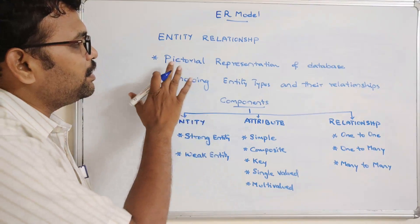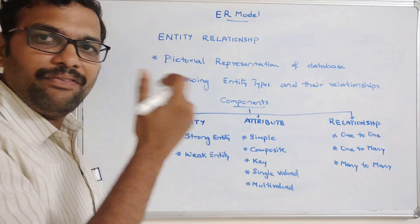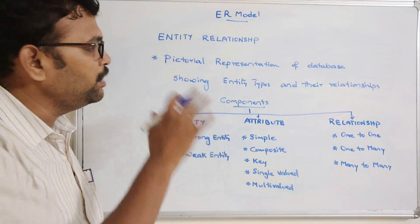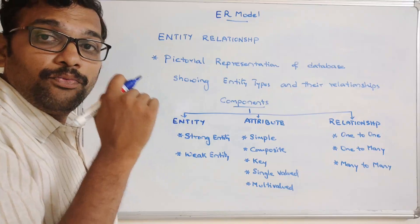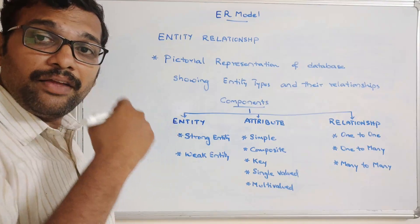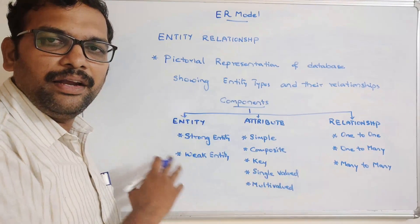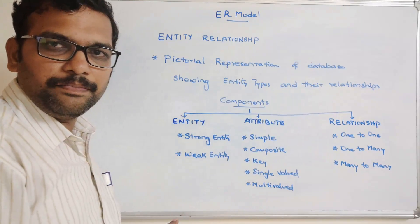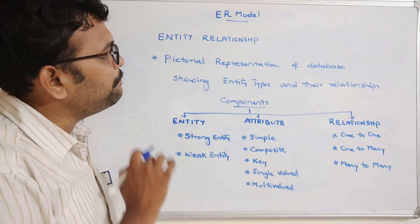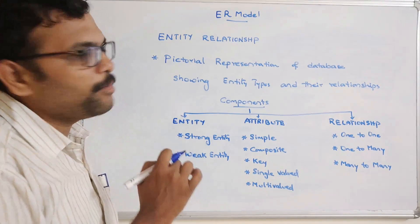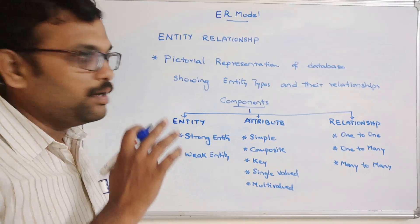As I mentioned, the ER diagram or ER model is a high-level representation and a diagrammatic representation of a database. There are different notations for each entity, attribute, and relationship. I hope you understood this basic introduction about the ER model — what it is and what its components are.